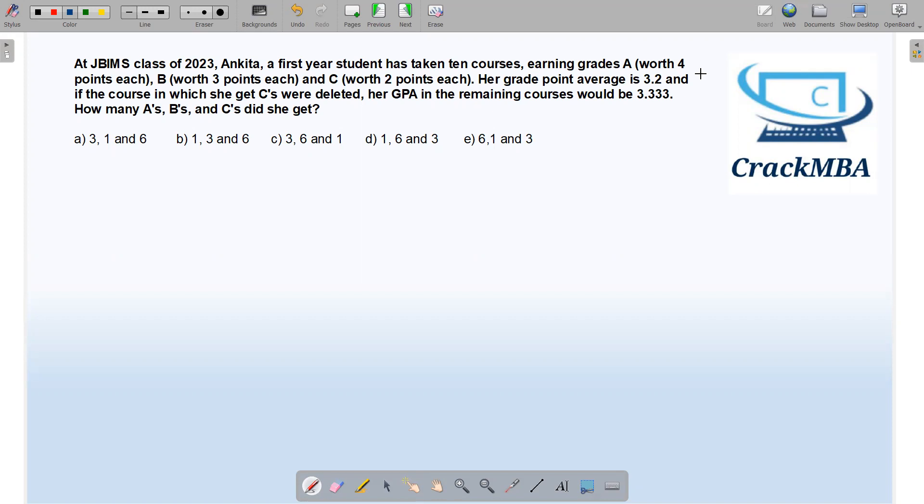So this is a clear question of weighted average. It's given that a·w1 plus b·w2 plus c·w3 divided by a plus b plus c equals my weighted average. So over here, 4a plus 3b plus 2c divided by a plus b plus c, and the total average is given as 3.2. We have to solve this equation to find the values of a, b, and c.